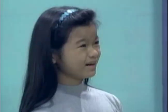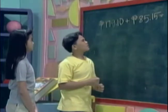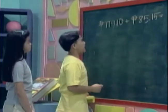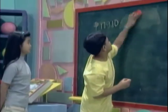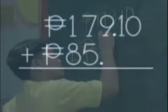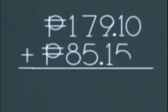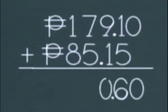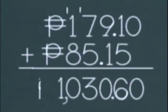After writing on the blackboard, one of them remarks it seems harder this way and that they got confused. They show the result: 1,030 pesos and 60 centavos. The other immediately says that's wrong.